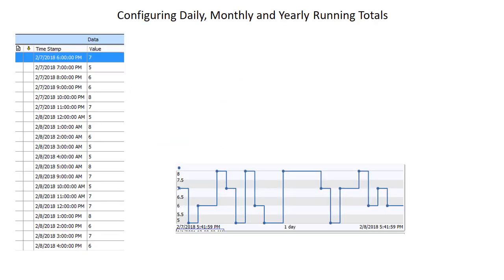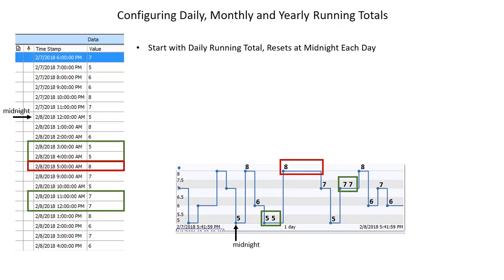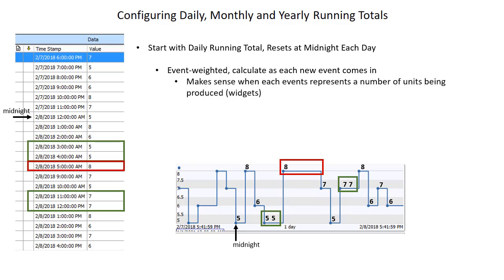Let's start by discussing how incoming data affects our event-weighted calculations. Here we have an example dataset of data coming in once an hour. We want to set up the daily running total resetting each day at midnight based on an event-weighted calculation. I've indicated midnight on our datasets, and overlaid the plot with the data on the left. For some values such as 5, there are repeat events, but there's a value of 8 that comes in at 5 o'clock with no additional event until 7. We'll calculate each time a new event comes in, which makes sense when each event represents a number of units being produced, such as widgets.